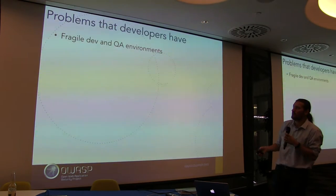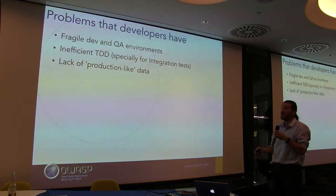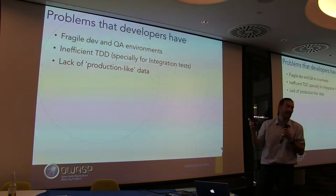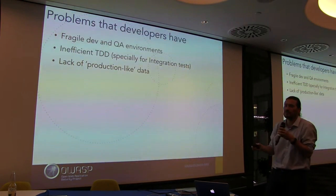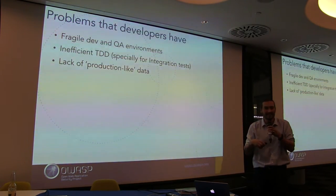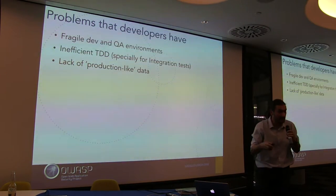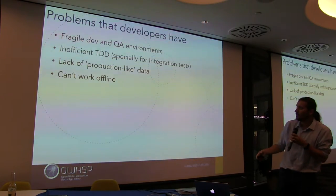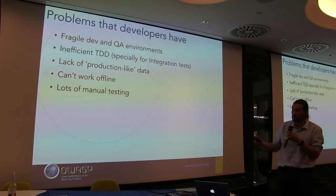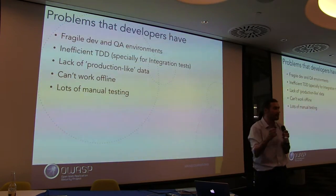What are the problems that developers have? There's friction with the QA environment. They do very inefficient TDD. They have a lack of production-like data — a lot of companies don't have good data to run their tests, either for security reasons or because there's not enough data variation to simulate real user data. They can't work offline. There's a huge amount of manual testing — and I think devs and QA should be banned from using a mouse.